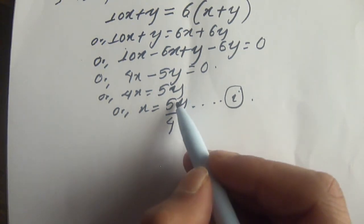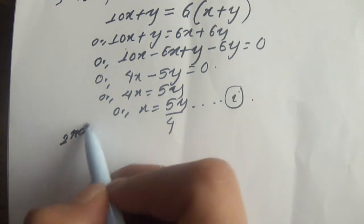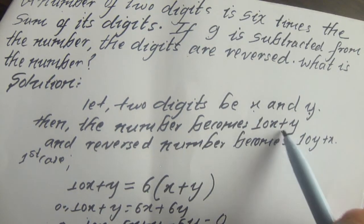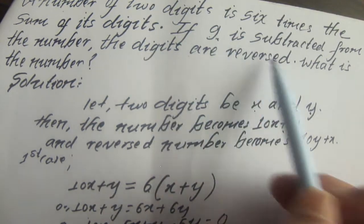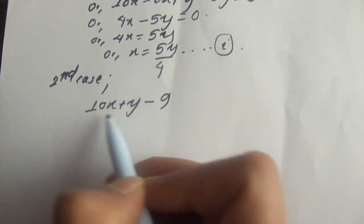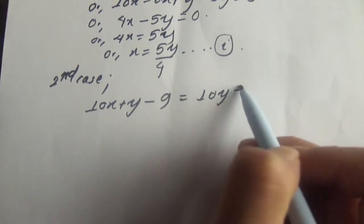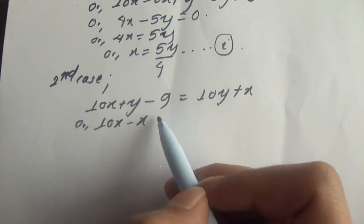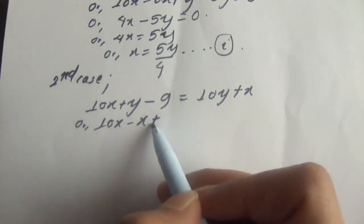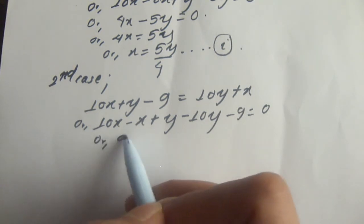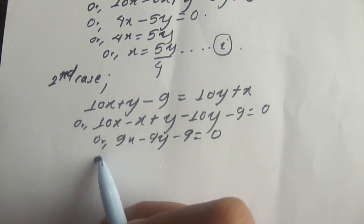In the second case, if 9 is subtracted from the original number, the digits are reversed. So 10x plus y minus 9 equals the reversed number 10y plus x.